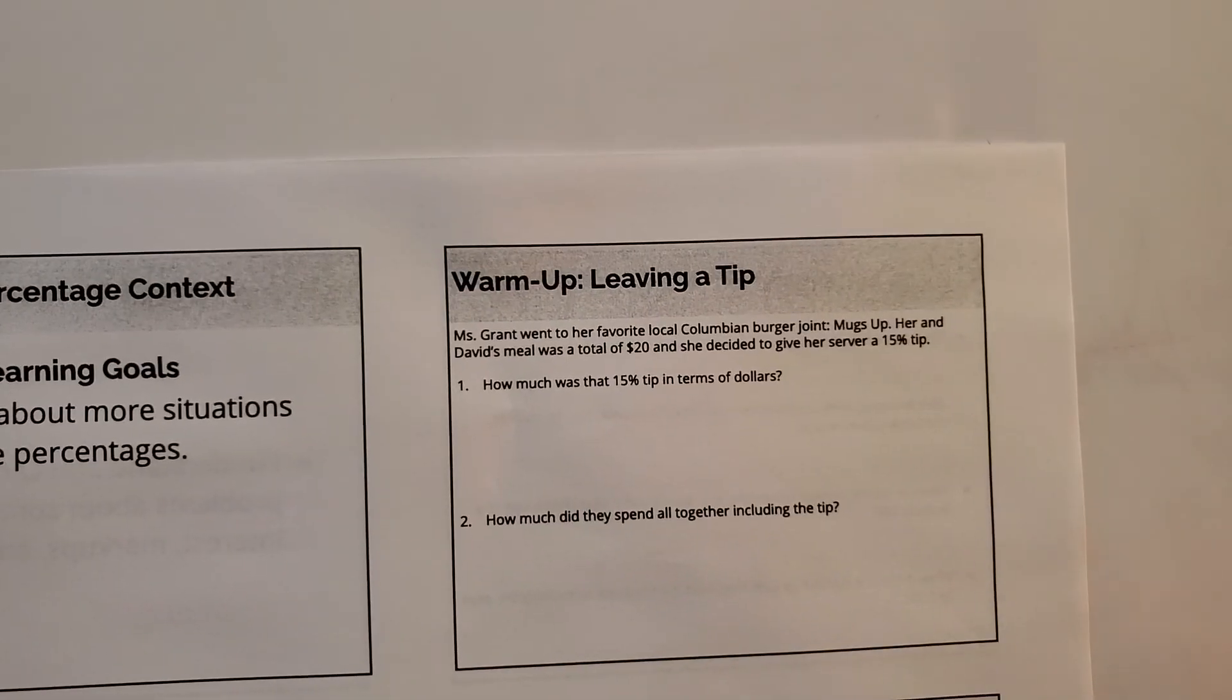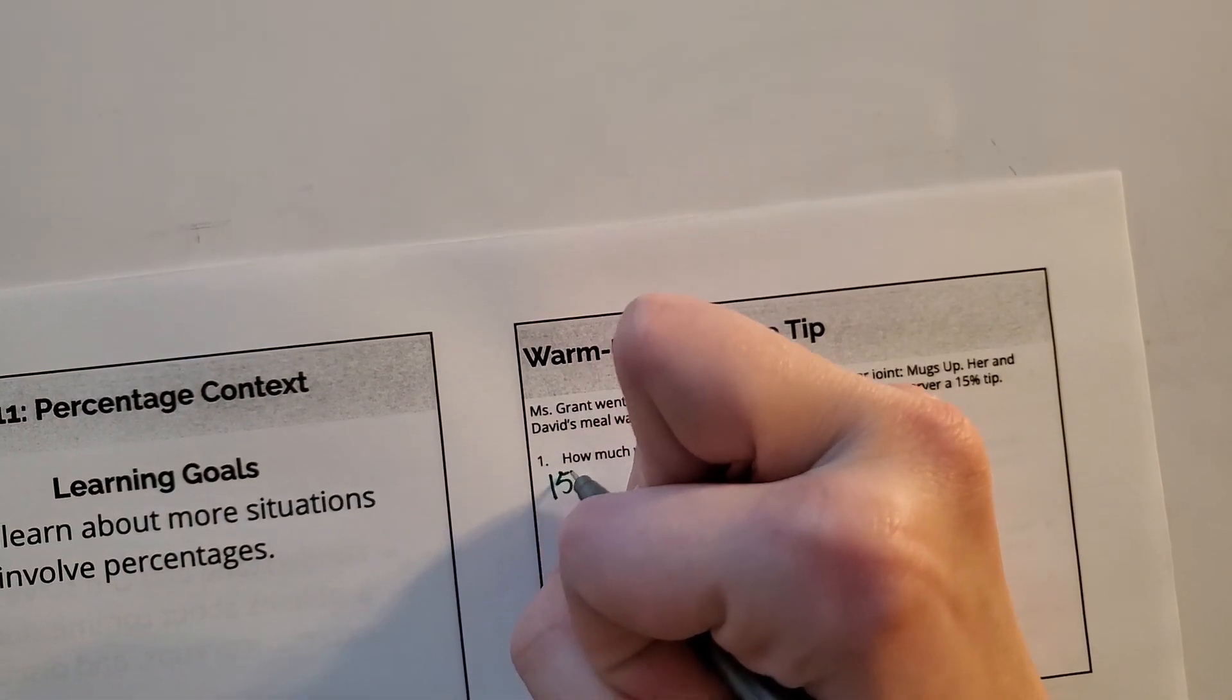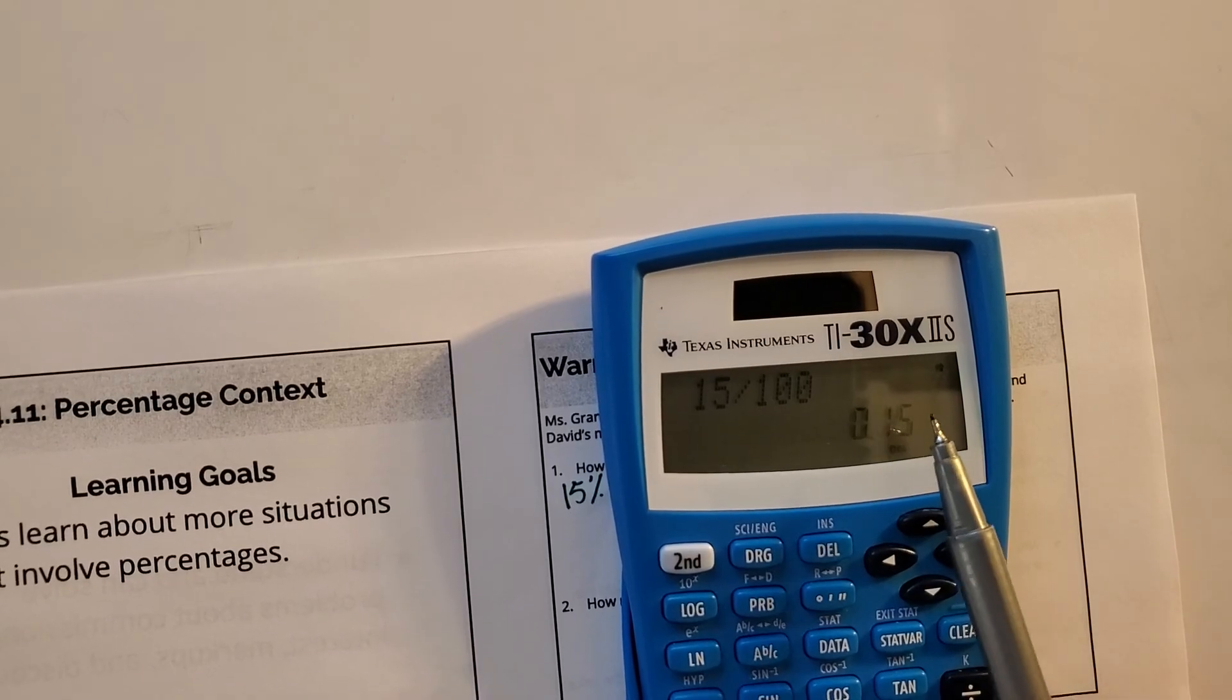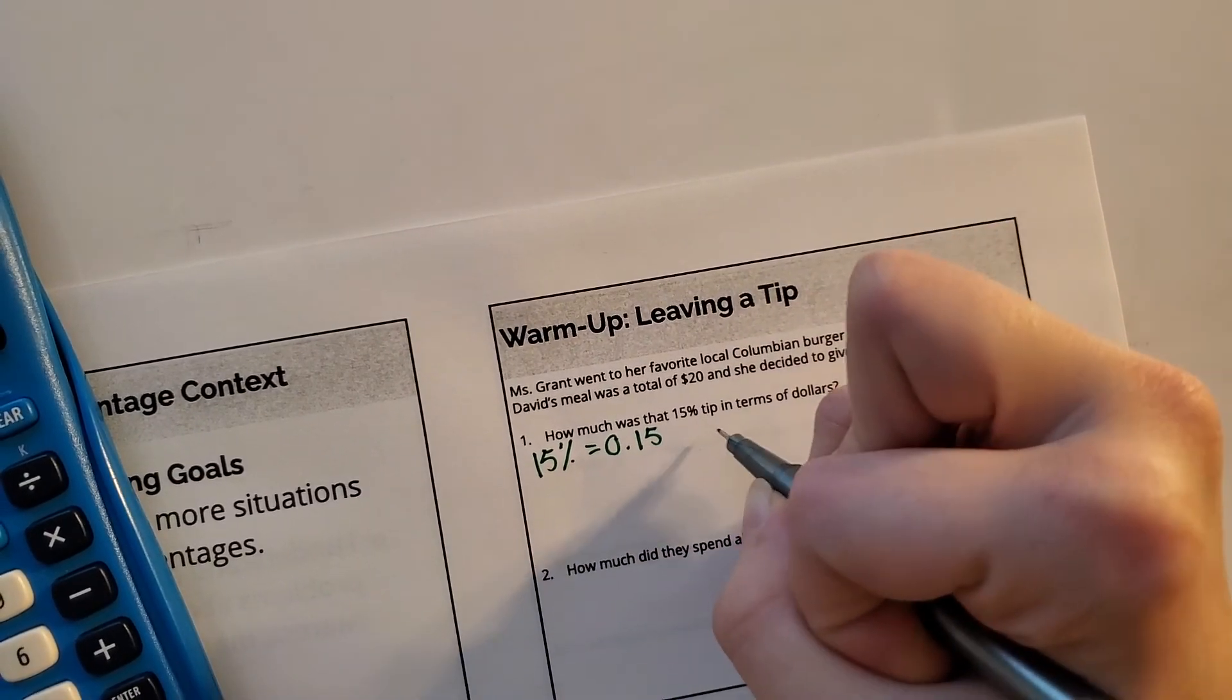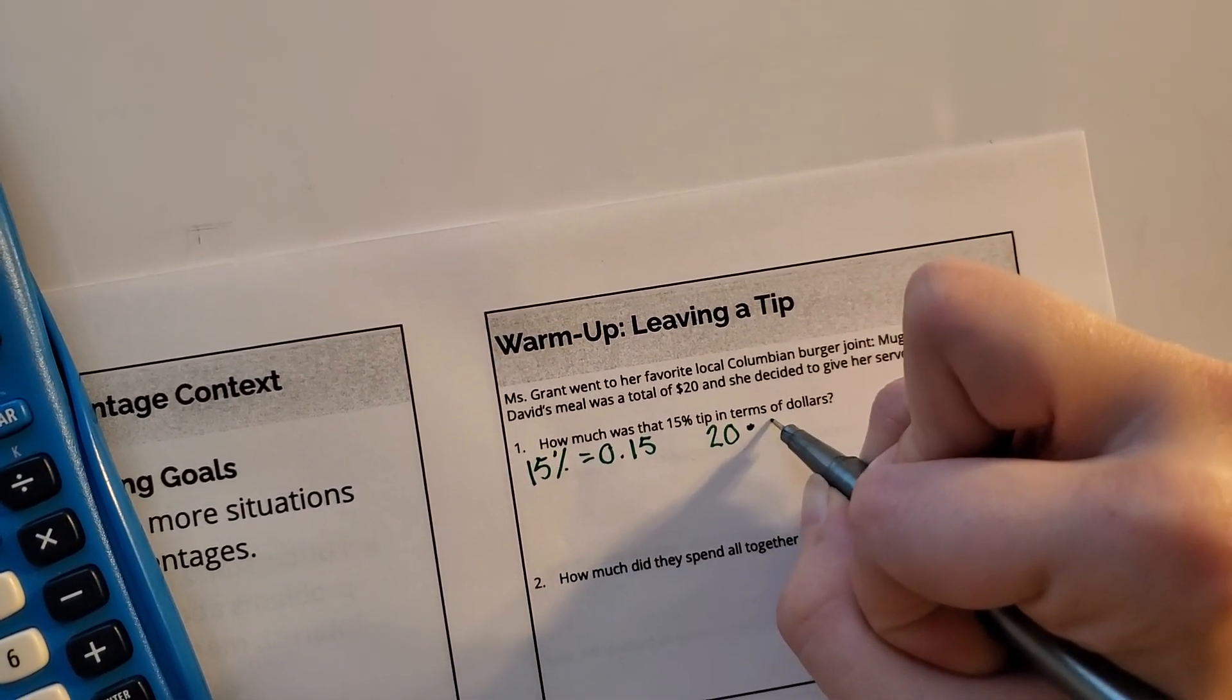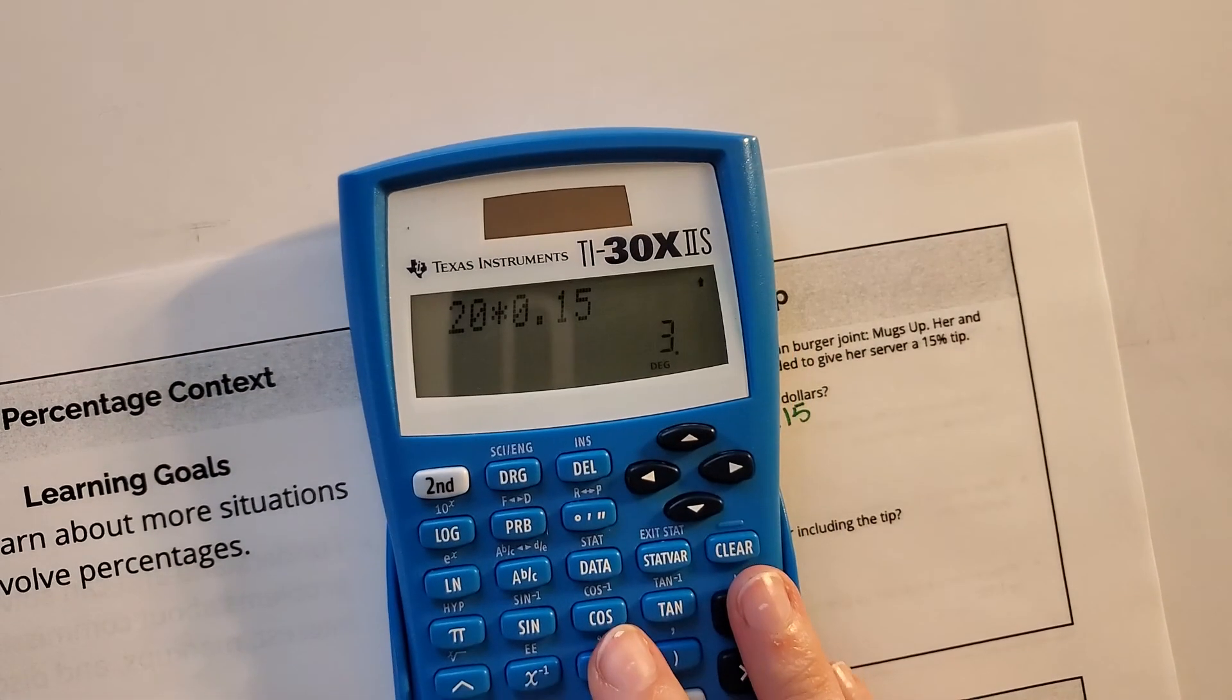Alright, so I need to find 15% of 20 to be able to find my tip. To find 15% of any number, I first need to turn 15% into a decimal. So 15% divided by 100 is 0.15. That is my percentage as a decimal.